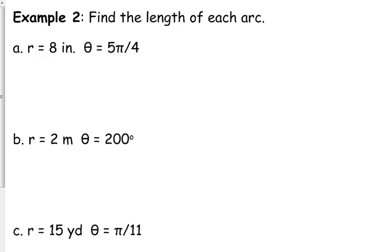Now, let's just look at some regular, use the formula kind of problems. So, let's find the length of each arc. If the radius is 8 and our theta is 5 pi over 4, that's straightforward. We've got the radius. Theta is in radians. So, all we have to do is multiply it out.